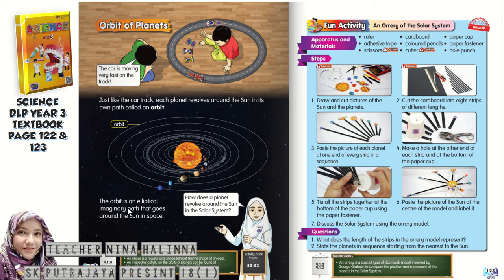So the orbit is an elliptical imaginary path that goes around the sun in space. On page 123, you can actually do the related activity at home with your family.